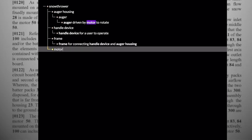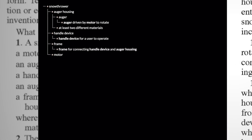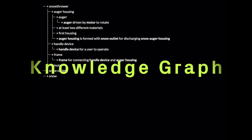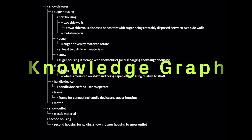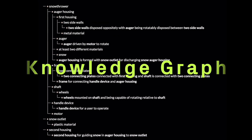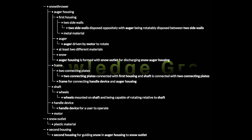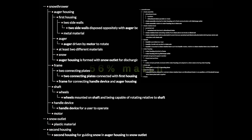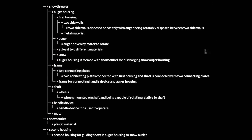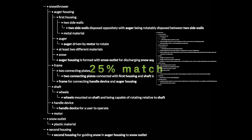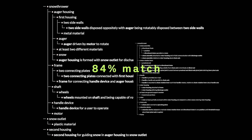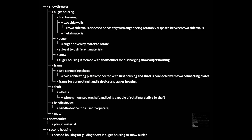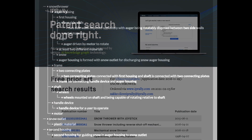This data is built into a thing called a knowledge graph, which is a super powerful representation of technology. Next, our AI compares the graph to tens of millions of prior art graphs and recognizes their technical similarities.